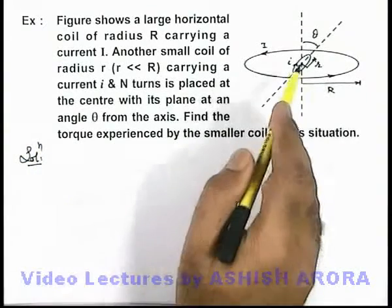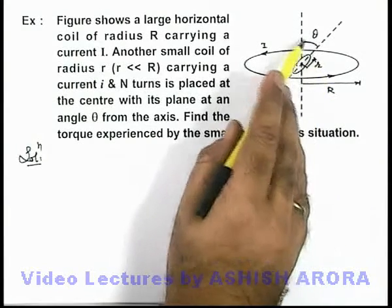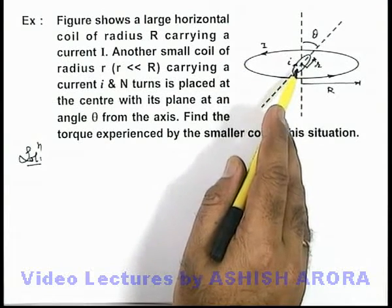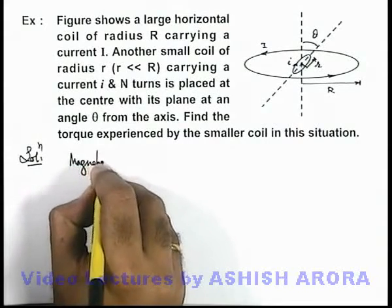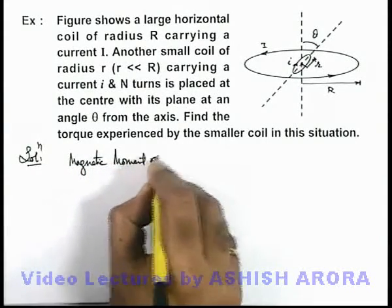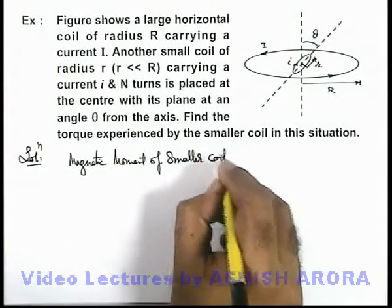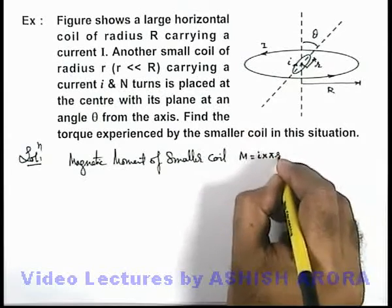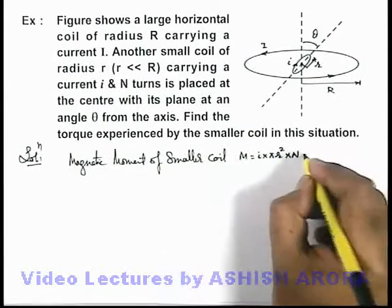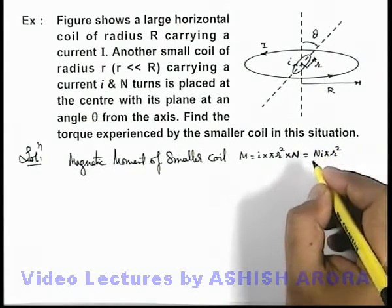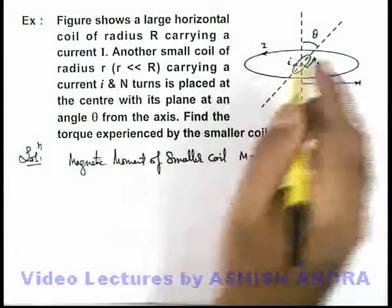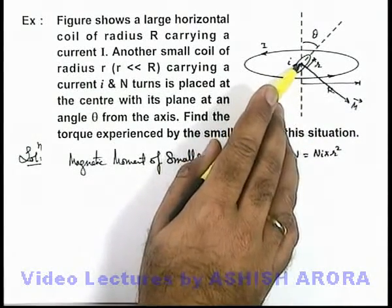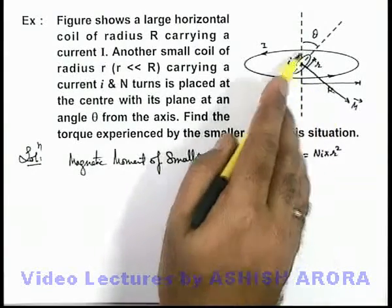The smaller coil is placed in the magnetic induction of the larger coil at some angle theta to the direction of magnetic induction, so it will experience a magnetic torque. To calculate the magnetic moment of the smaller coil, we know that the magnetic moment M is given as the product of current multiplied by the area enclosed by the smaller coil, which is π·r², multiplied by the total number of turns n. So it will be M = n·i·π·r². The direction of this magnetic moment is always normal to the plane of the coil, and the direction is given by the right-hand thumb rule by circulating fingers along the direction of current.